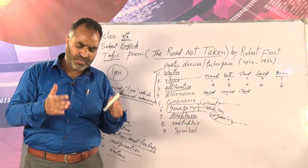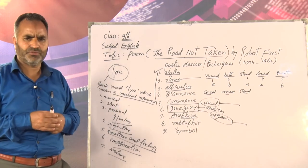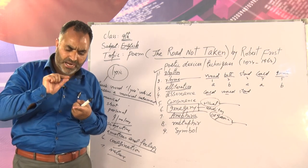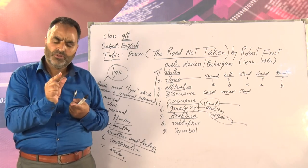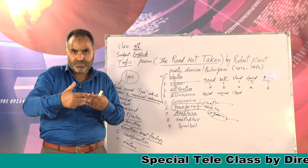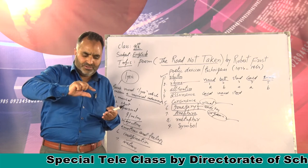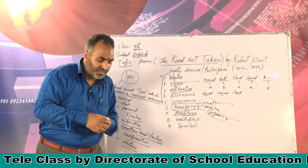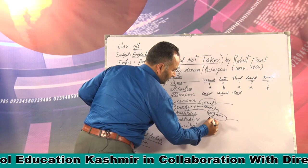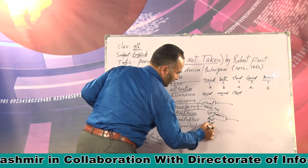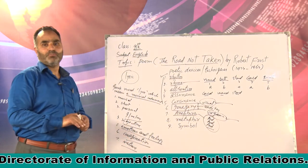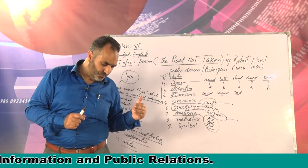Another poetic device in this poem is anaphora — A-N-A-P-H-O-R-A. Anaphora is the repetition of an identical word or group of words in successive verses or clauses. For example, in stanza one: line two starts with 'And,' line three starts with 'And,' and line four starts with 'And.' So that is an example of anaphora — lines two, three, and four start with the same word.